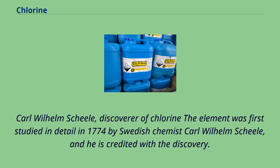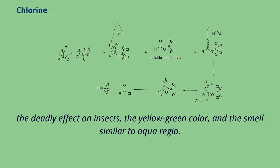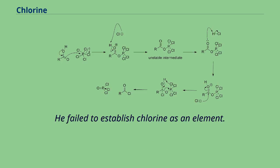The element was first studied in detail in 1774 by Swedish chemist Carl Wilhelm Scheele, and he is credited with the discovery. Scheele produced chlorine by reacting MnO2 with HCl. Scheele observed several properties of chlorine: the bleaching effect on litmus, the deadly effect on insects, the yellow-green color, and the smell similar to aqua regia. He called it dephlogisticated muriatic acid air since it is a gas and it came from hydrochloric acid. He failed to establish chlorine as an element.